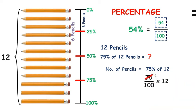25 into 3 equals 75. 25 into 4 equals 100.